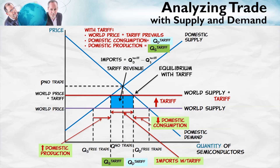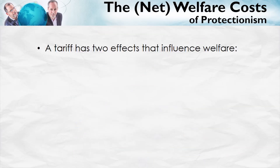Now, what I want to do is look at the welfare consequences of this. The welfare consequences are going to depend upon domestic consumption falling and domestic production increasing. Let's take a look at the net welfare costs. We can find the costs in two different ways: we could look at the costs and benefits to consumers, to producers, and to government, and sum all those up — that would give us the net cost.